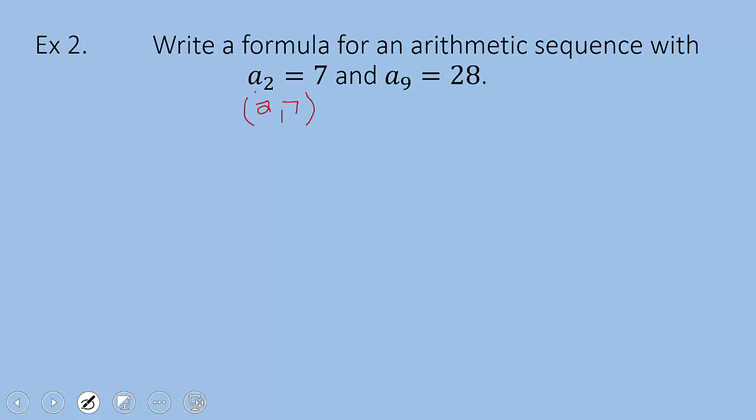This is really the point 2, 7 and this is really the point 9, 28 and let's write the equation of the line in point slope form from these two points.